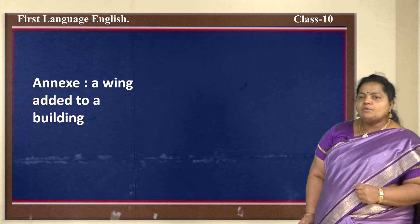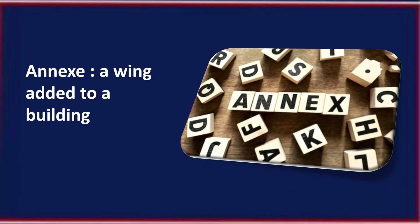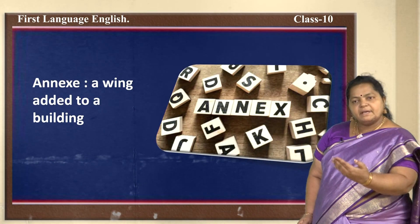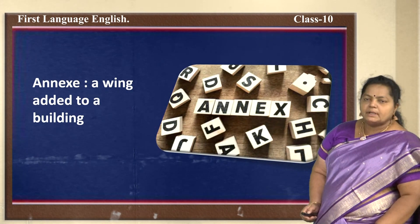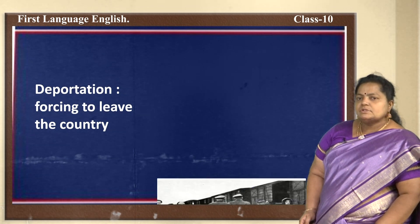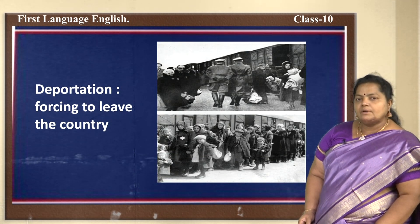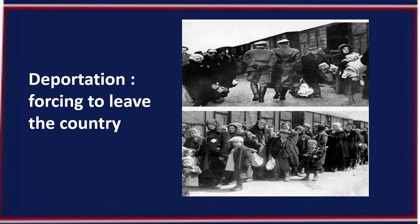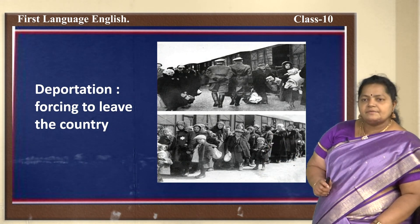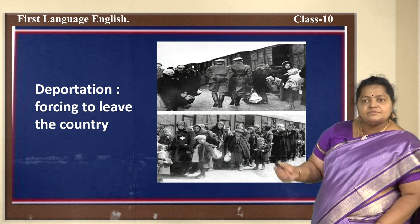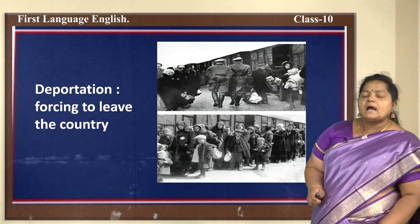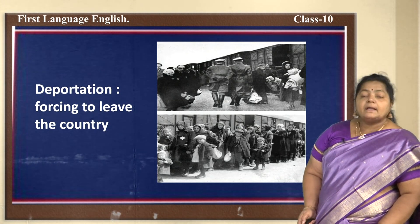A 'wing' is a section added to a building — a separate wing behind or in front of the main building. 'Deportation' — forcing someone to leave their country. This is what happened to Jewish people under Hitler; they were forced out, told they were not citizens and had to leave.